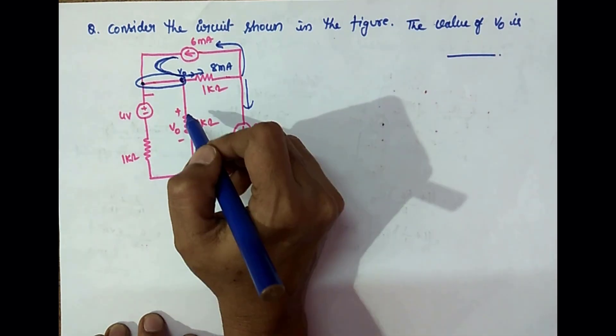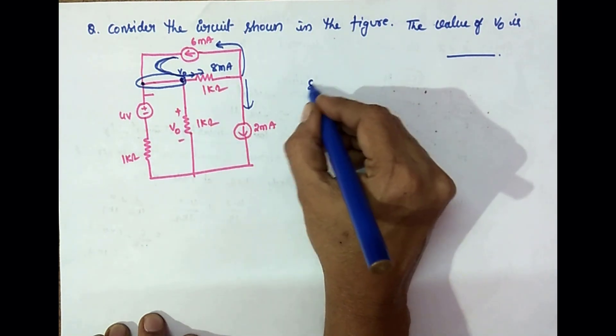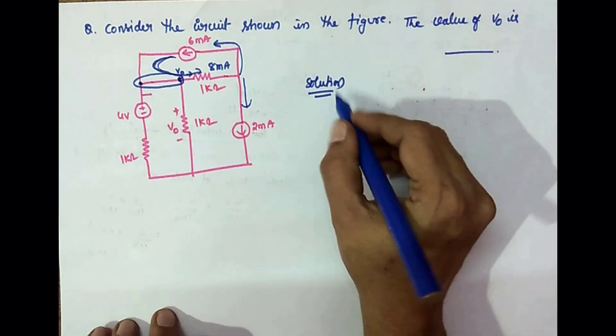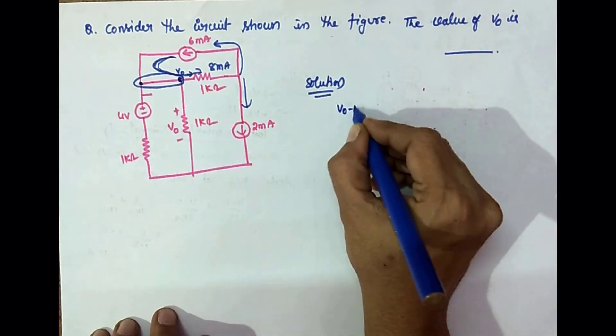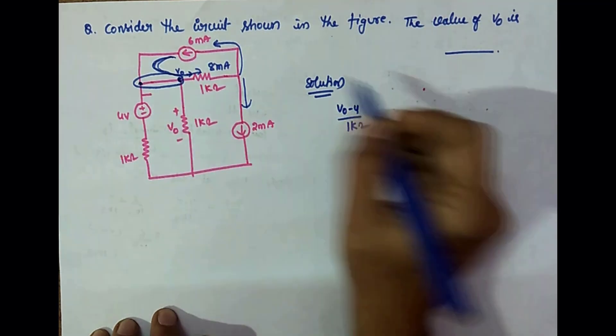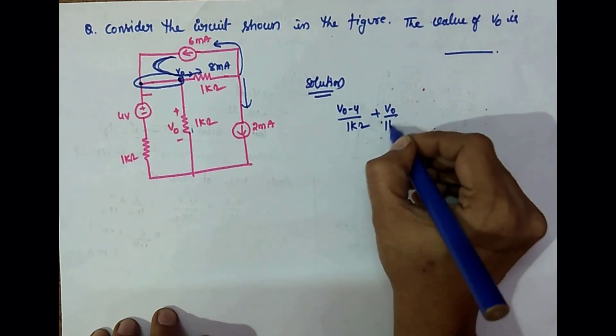So with this information, if we write the KCL at this node, the KCL is: V0 minus 4 by 1 kilohm for this part, and for this part it is plus V0 by 1 kilohm.